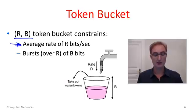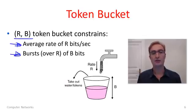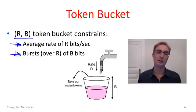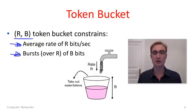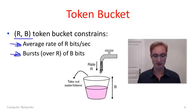The R parameter constrains the flow of traffic to have an average rate of no more than R bits per second. The B parameter constrains the traffic to have instantaneous bursts — traffic injected into the network over and above the long-term rate of R — of no more than B bits. That's the limit on the instantaneous load which can be placed on the network by the traffic flow. Now we have a picture here of the bucket.